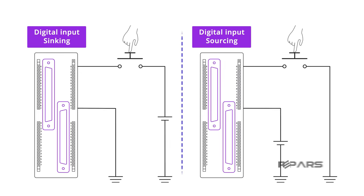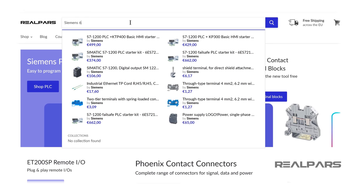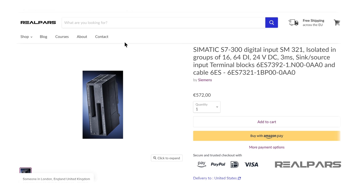In this video, we're going to talk about sinking and sourcing PLC digital input modules and how they're connected to field devices. We will be using a Siemens digital input module with this part number. If you want to order this module online, you can head on over to the RealPars Marketplace or simply click on this link here.